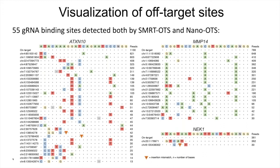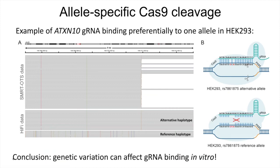Another interesting finding: since we now have the reference genome for this cell line, we can look at the HiFi data and see that in one case we have two alleles in the whole genome data, but in our off-target sequencing data we only have one allele — only the alternative haplotype reads. This is consistent with allele-specific Cas9 cleavage. The alternative haplotype contains a SNP that makes the guide RNA more similar to it, so the guide RNA will bind only to that allele but not to the reference haplotype. The conclusion is that genetic variation can affect guide RNA binding — at least in vitro — and that's important because people are different and some SNPs can give unexpected off-target sites.